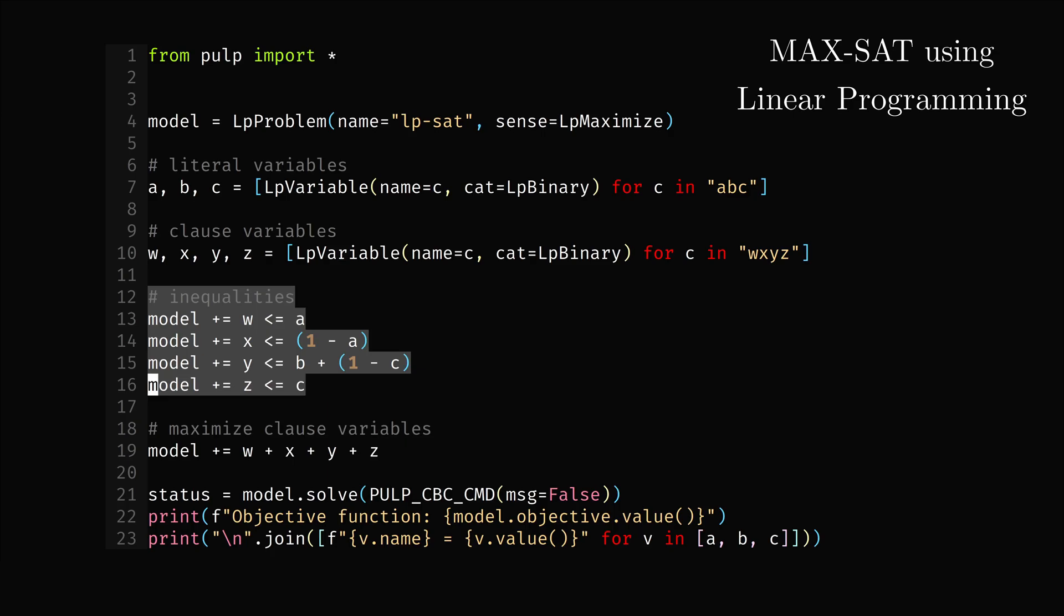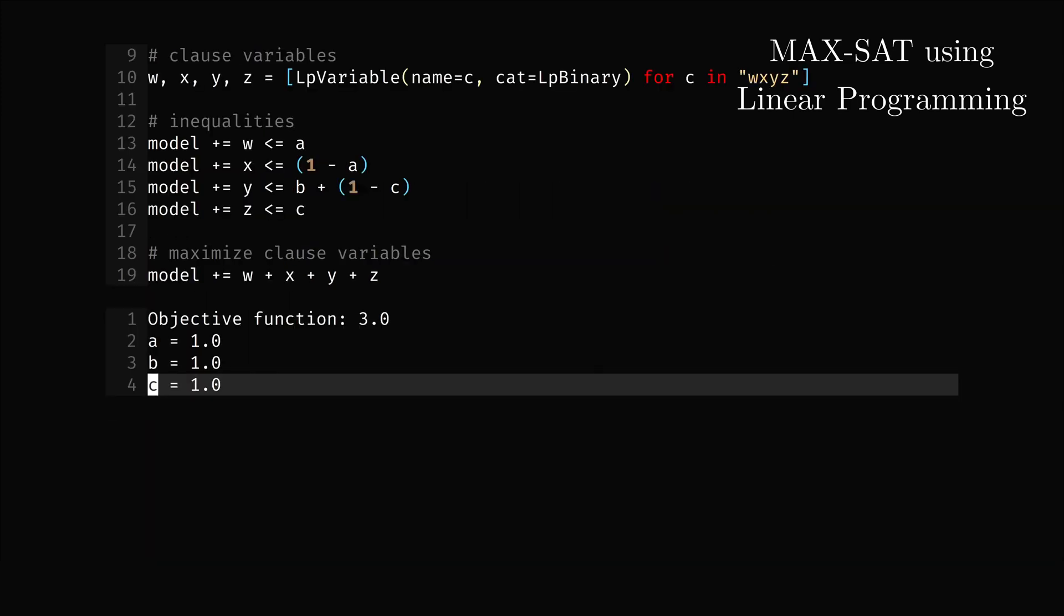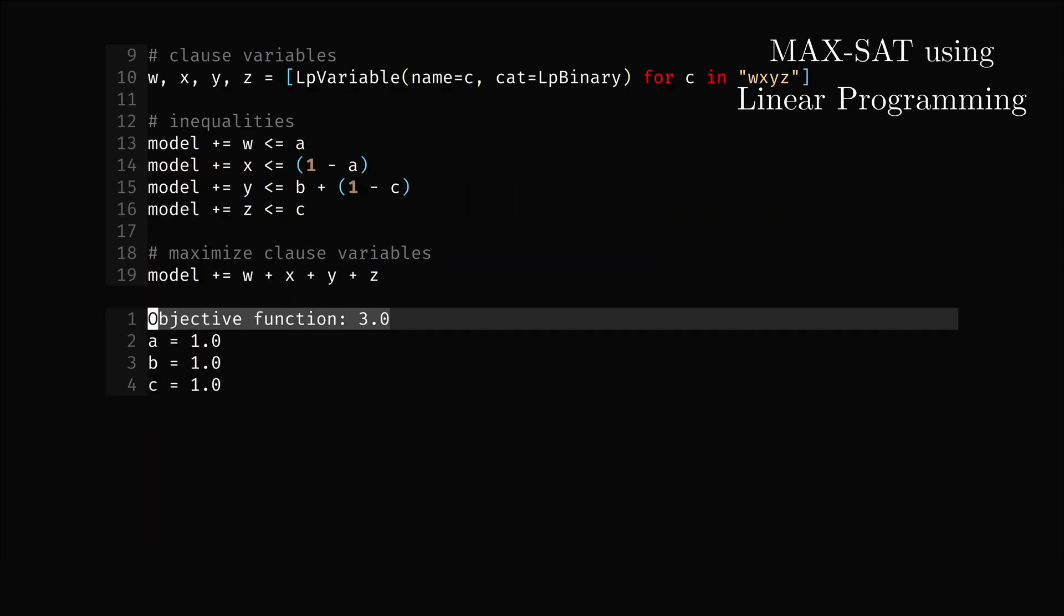If we, for example, take a look at the third inequality, the only way for y to be 1 is if at least one of the literal variables are satisfied, so either b is 1 or c is 0. If none of them are, then the right side will be 0, forcing y to be 0 as well. Running the program yields the objective function of 3, meaning that only 3 of the 4 clauses can be satisfied, which we already know.